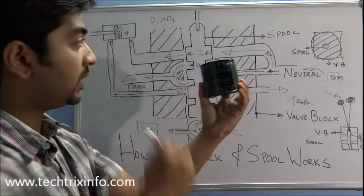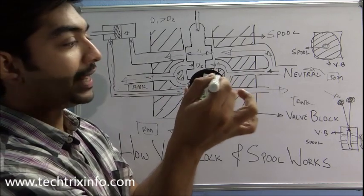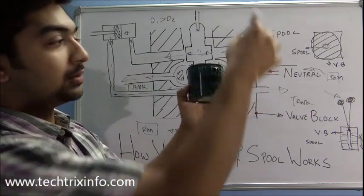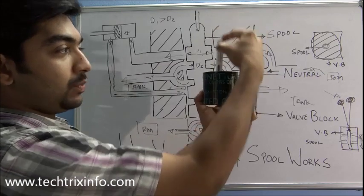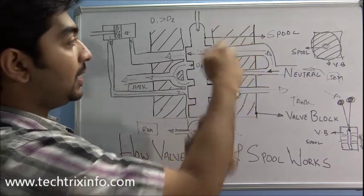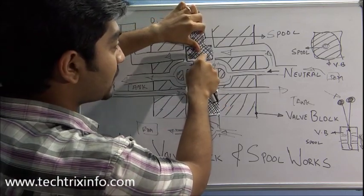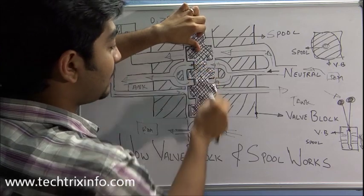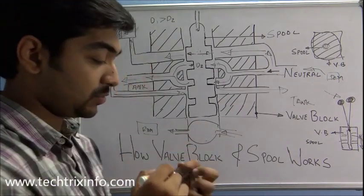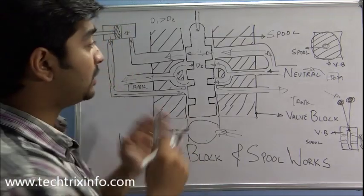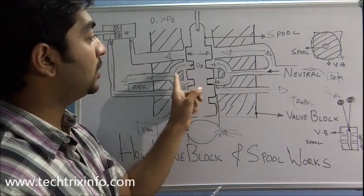This is our valve block. The top view looks like this, with a spool in the center. If you drill a hole and insert the spool through it, that's how a valve block looks. As you move the lever, the spool moves up and down. When D1 — the higher diameter — comes in, the ports are closed, and when the lesser diameter D2 area comes in, the ports open. That's the basic function of how the spool moves inside a valve block and how hydraulic oil is channeled through the galleries.